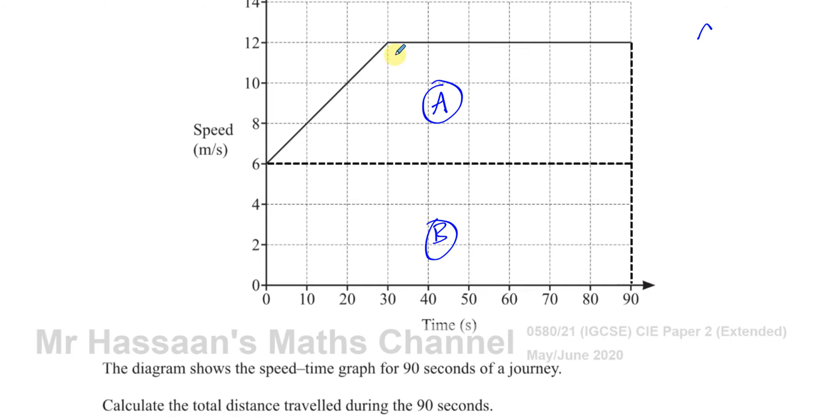Area A is a trapezium, and the area of a trapezium is the distance between the parallel sides, which is called H, which in this case is between 6 and 12. So this would be the H, divided by 2, times the sum of the parallel sides, which would be from 30 to 90, that's 60. And the other parallel side is between 0 and 90, which is 90. So it's H over 2 times A plus B.